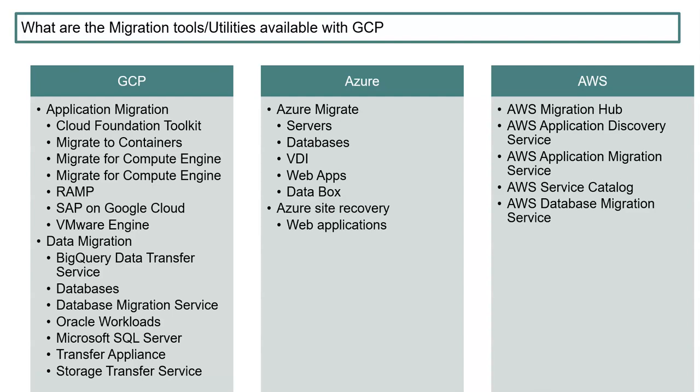RAMP is a holistic end-to-end migration program to help simplify and accelerate your migration path. SAP on Google Cloud maintains business continuity on a secure cloud, giving you business agility while allowing you to maximize the value of your SAP data. VMware Engine lets you migrate and run your VMware workloads natively on Google Cloud in just a few clicks.